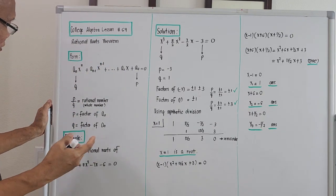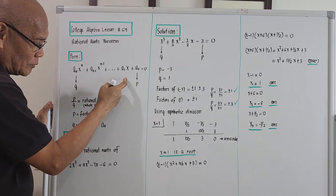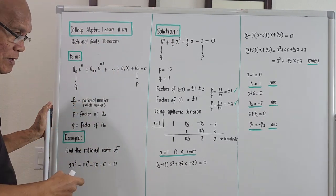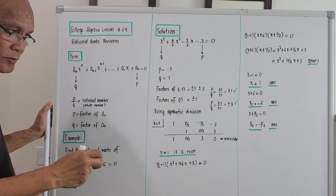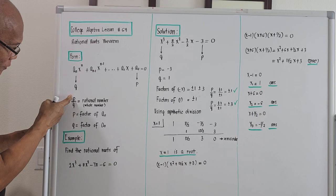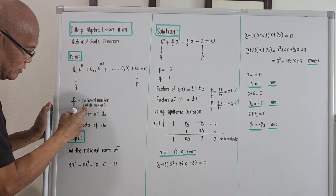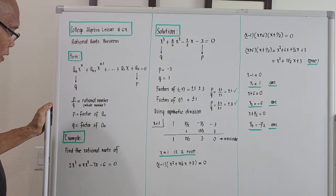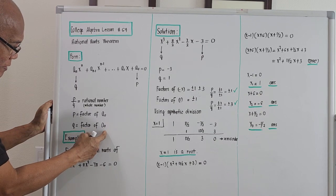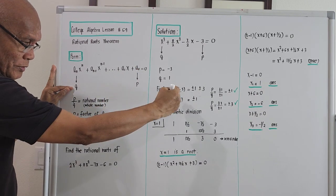Using the Rational Root Theorem, we designate q as the coefficient of the first term and p as the coefficient of the last term — the constant. We then take the ratio p over q, where p over q must be a rational number. Here, p is a factor of a-sub-zero (the pure constant term) and q is a factor of a-sub-n (the leading coefficient). This brings us closer to the possible values of x.